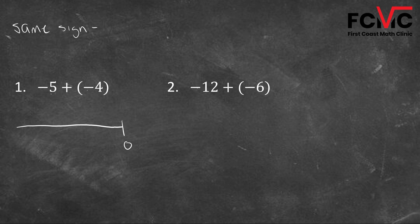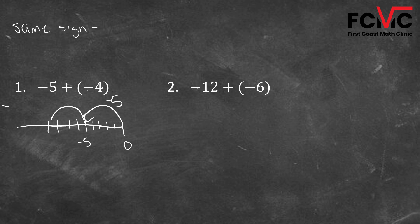I know I've got two negative values here, so our answer has to be in the negatives. I'm going to go five units into the negatives — one, two, three, four, five. That takes us to negative five, and then we're adding an additional negative four, so we go four more units. And where do we wind up? We wind up at negative nine.